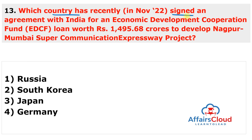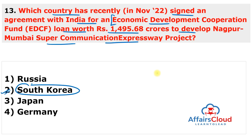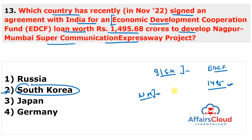Question 13: Which country signed an agreement with India for an Economic Development Cooperation Fund (EDCF) loan of approximately ₹1,495 crore to develop the Nagpur-Mumbai Super Communication Expressway project? The answer is South Korea. India and South Korea signed this agreement to establish an intelligent transport system on the expressway, aiming to improve traffic management efficiency. This is the first project funded by the EDCF by the Republic of Korea.